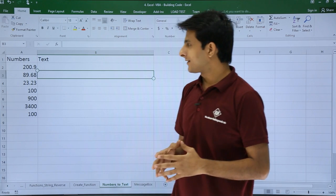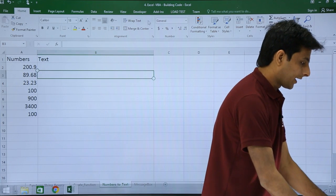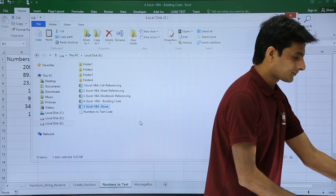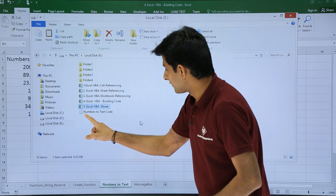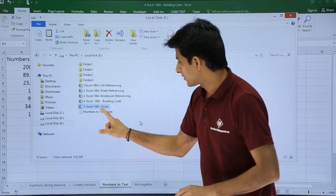First, I'll show you the macro code here. I've already pasted it in a notepad. If you see, that's the number to text code. If I double click and open it...